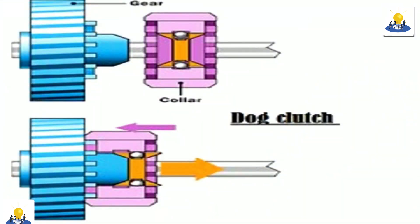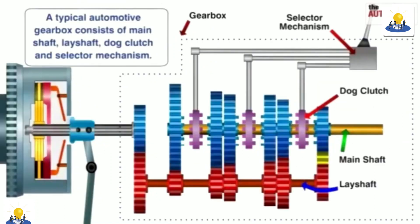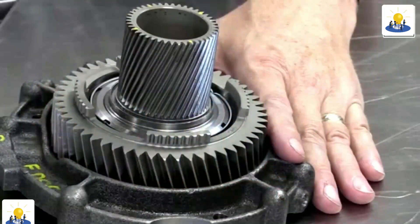The dog clutch is a sliding selector mechanism that sits around the output shaft. It has teeth to fit into the splines on the shaft, forcing that shaft to rotate at the same speed as the gear hub.